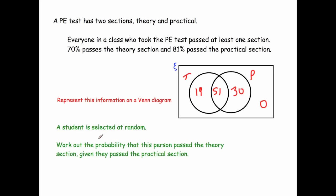The next part is a conditional probability question. A student is selected at random. Work out the probability they passed the theory section given that they passed the practical section. Since we know they passed the practical, we're only looking inside the practical circle — that's 81 total. Of those, 51 also passed the theory. So the probability is 51/81.